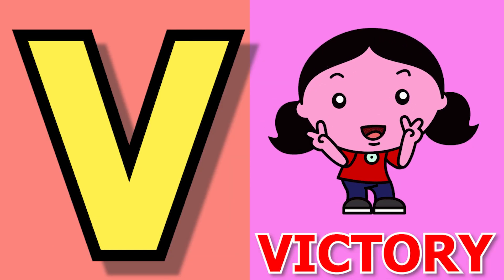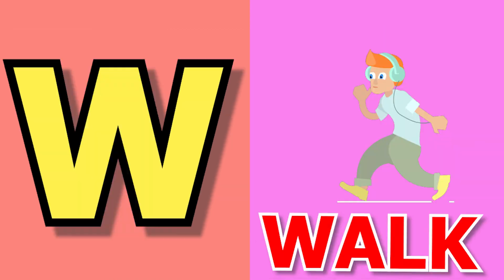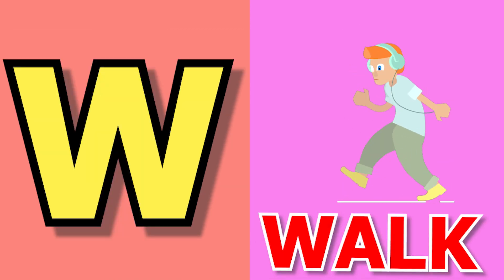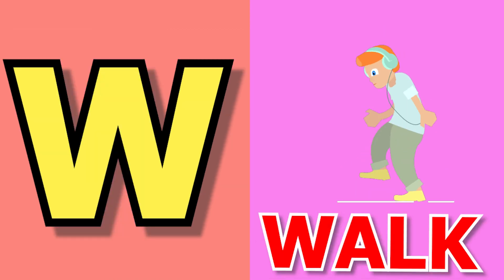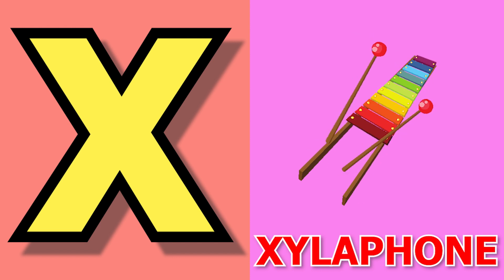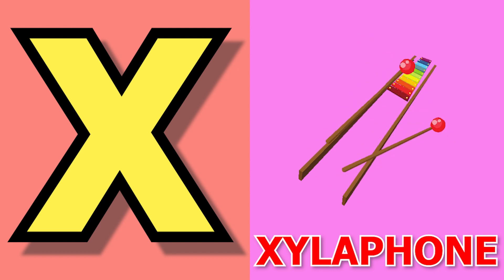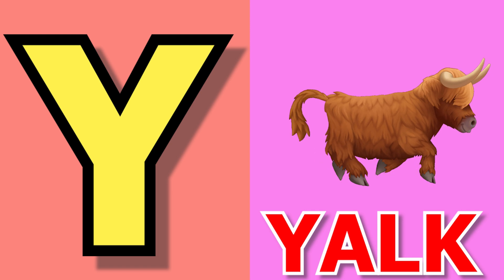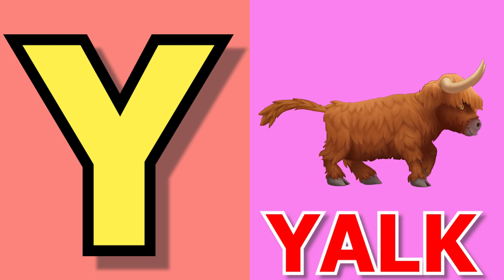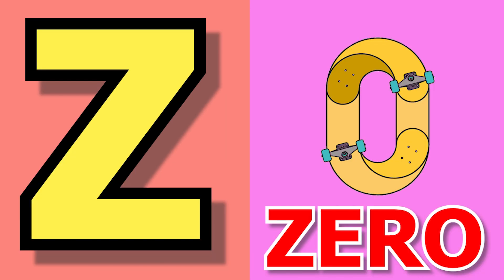B for victory, victory means zir. W for walk, walk means chalna. X for xylophone, xylophone means sartaran. Y for yat, y for yalk, y jak means yak. Z for that zirou, zirou means chalnae.